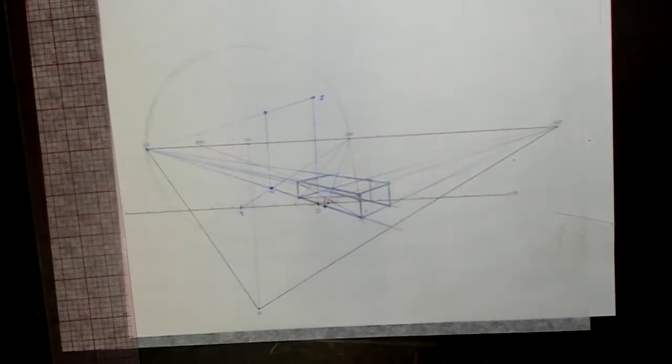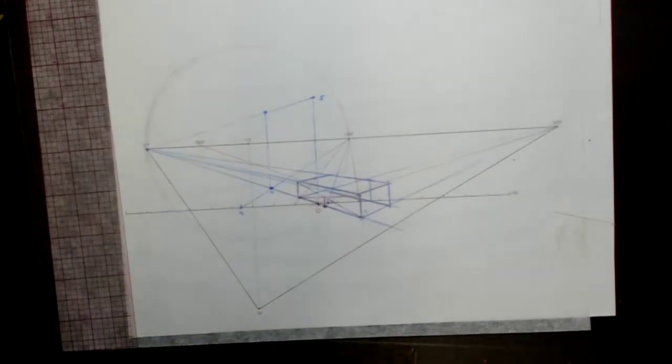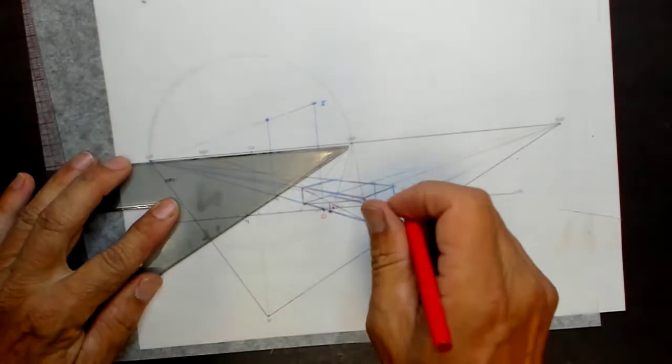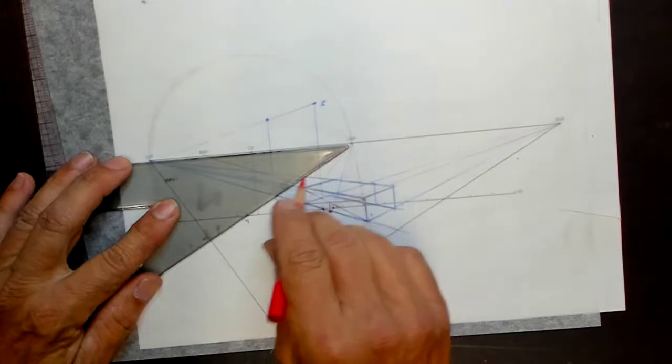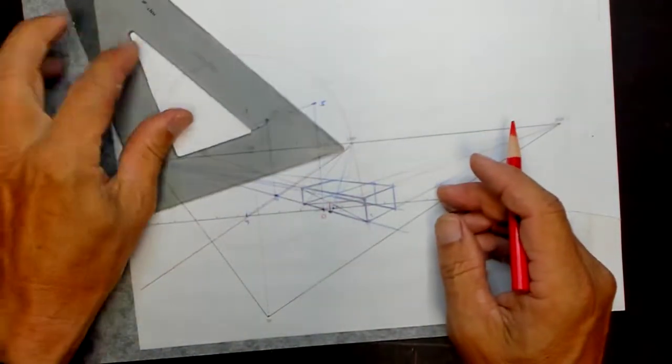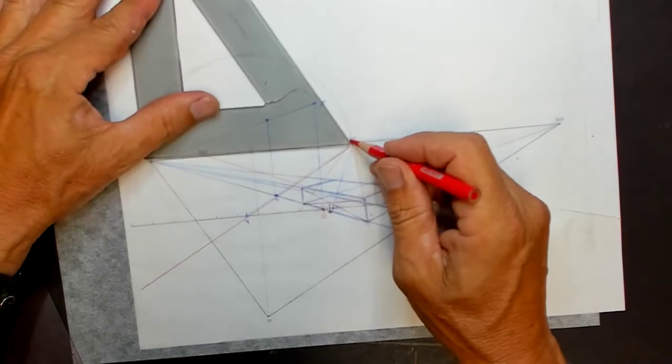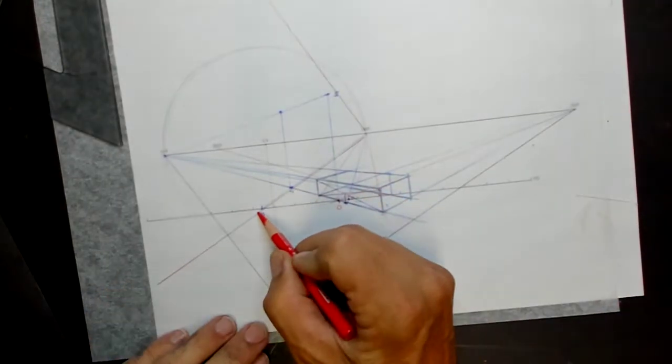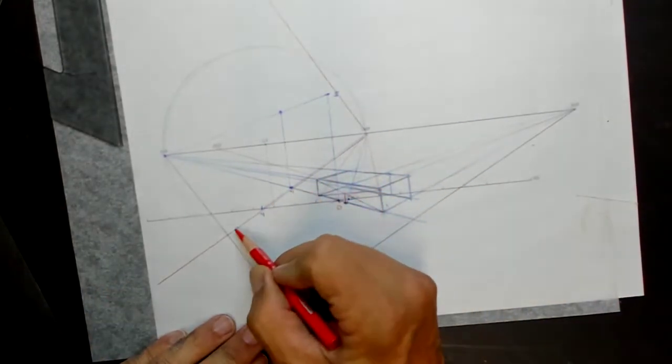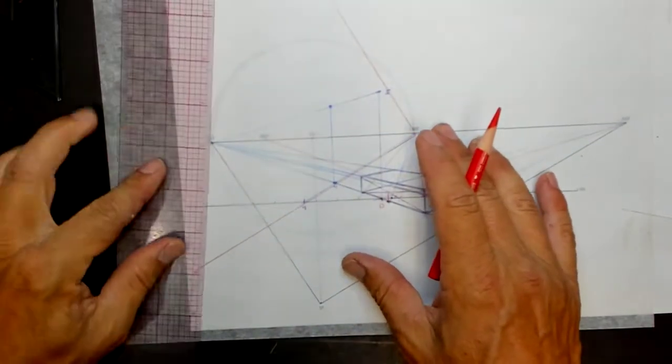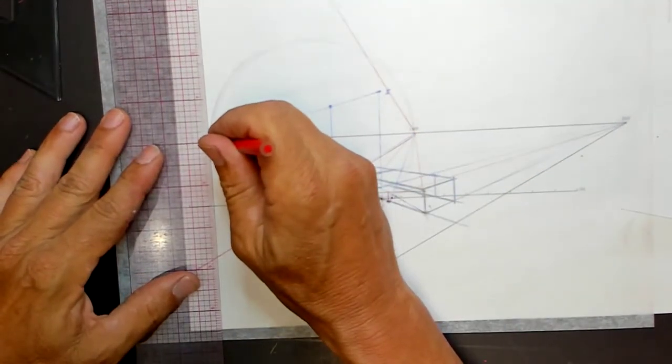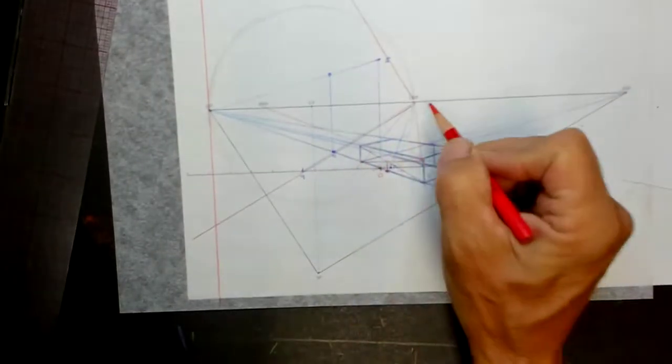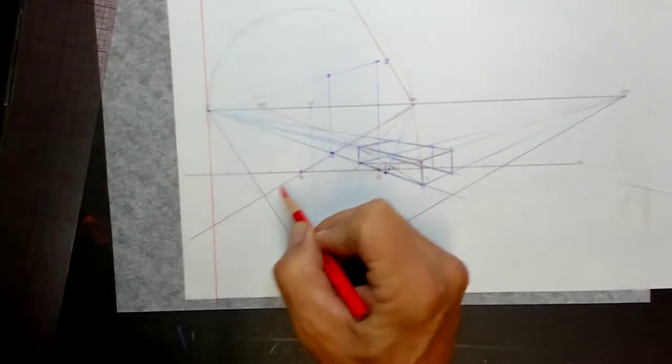So let's do that. Here is 30 degrees and here is 60 degrees. Interesting that this four is almost like tangent with that 30 degrees. Hate when those tangents happen.